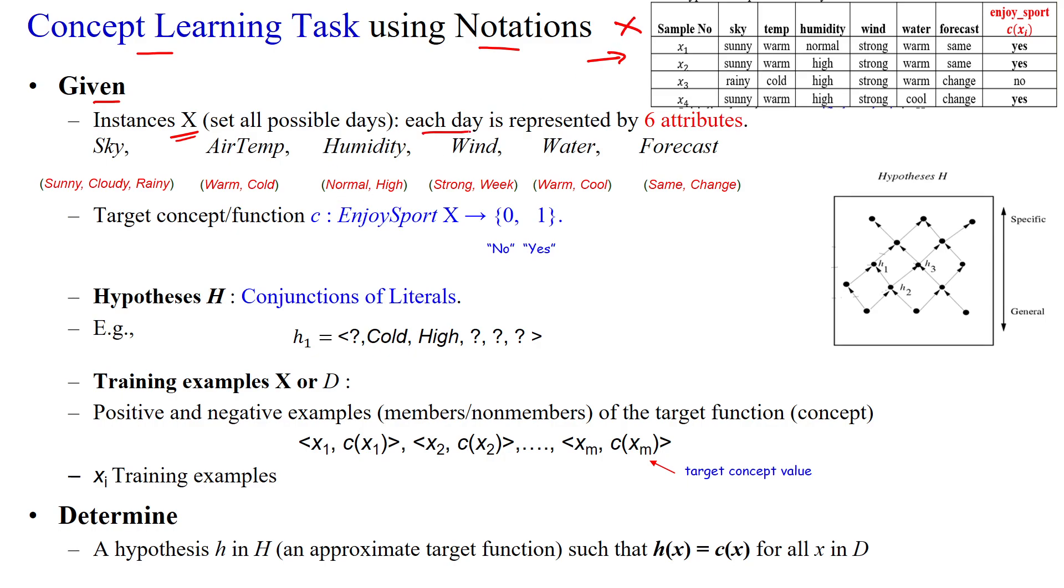Here the problem statement is each day is represented with six attributes: sky, temperature, humidity, wind, water, and forecast. So six attributes.